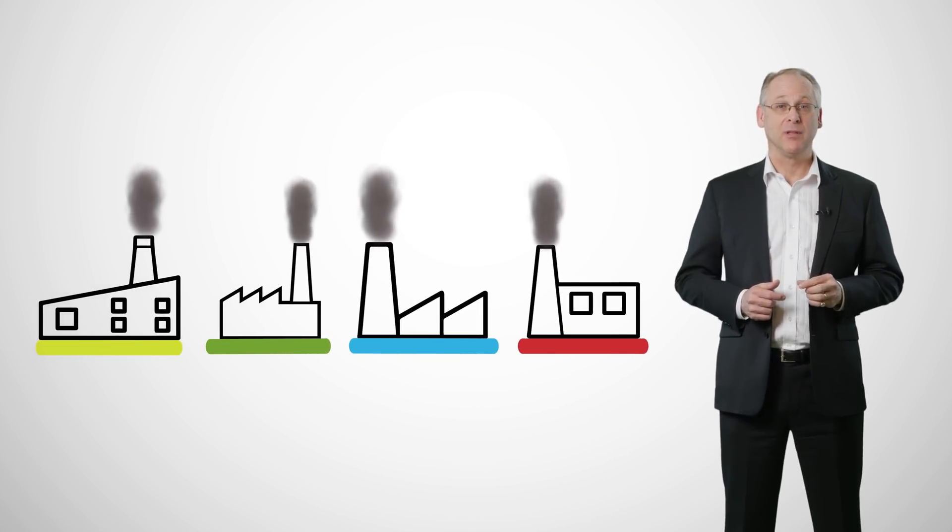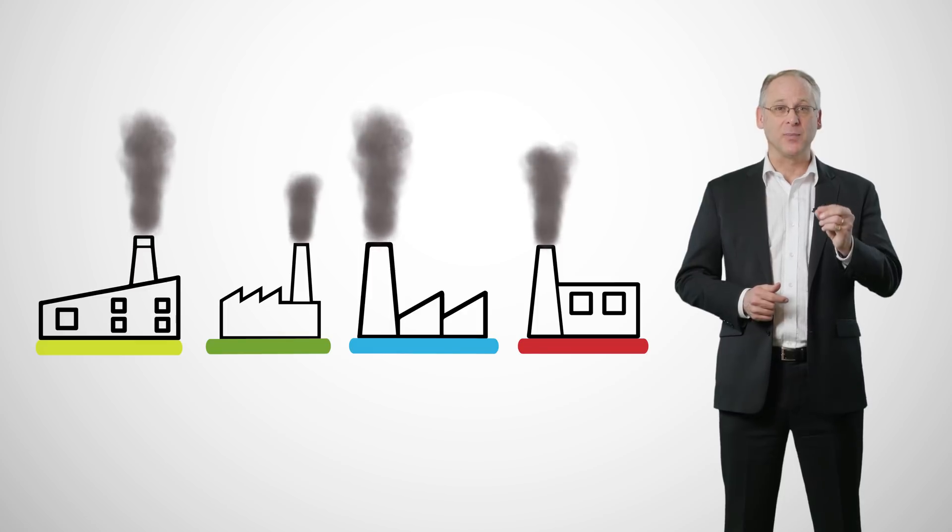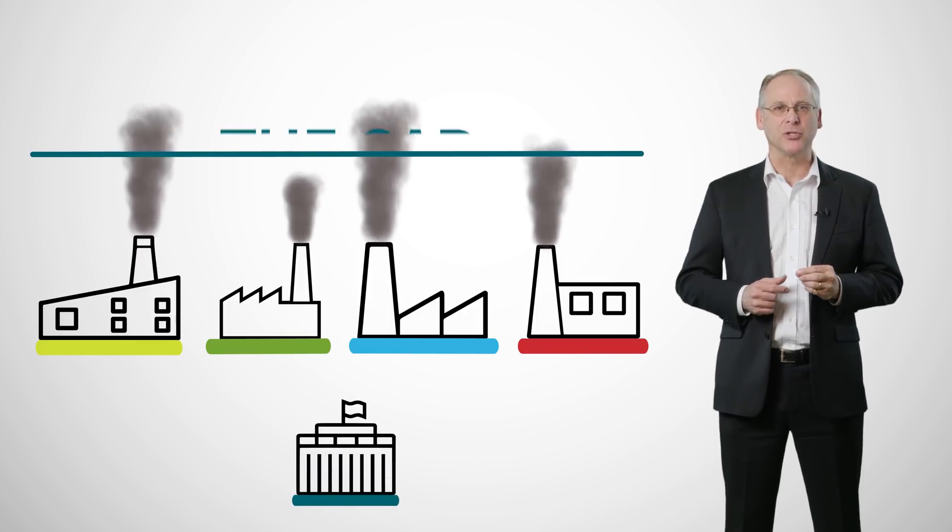As the name suggests, a cap-and-trade system has two parts. The first part is the cap. The government sets a maximum amount of emissions.